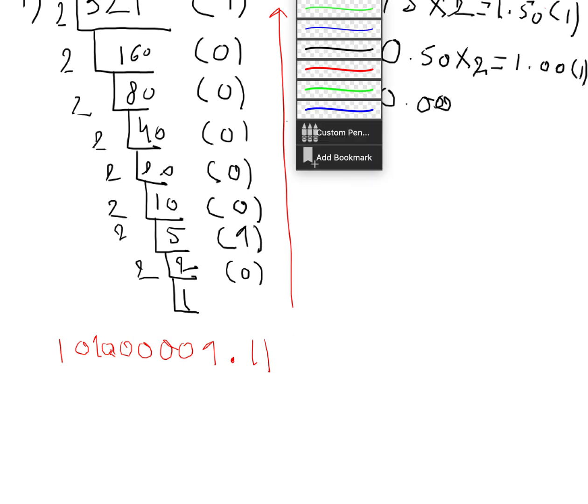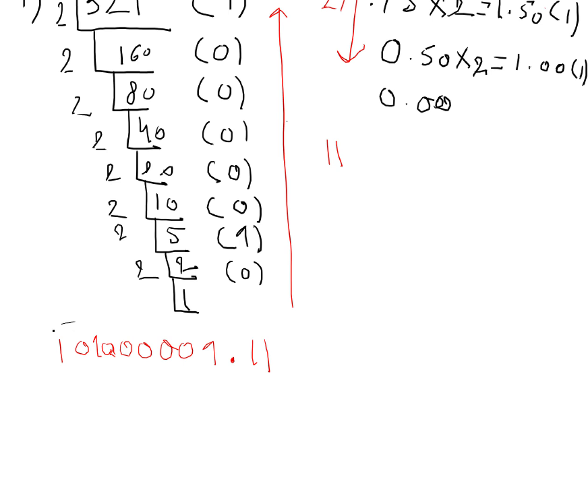So we can conclude here that the binary representation for this number 321.75 is given by this answer here, and this is your valid answer.